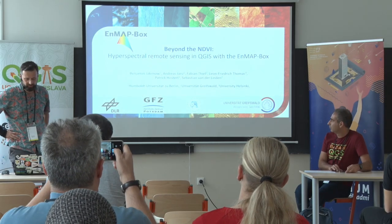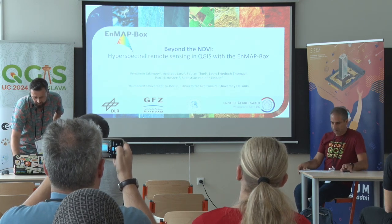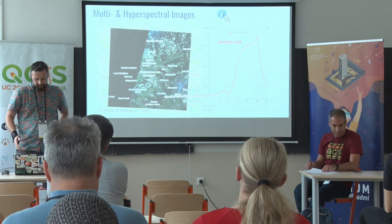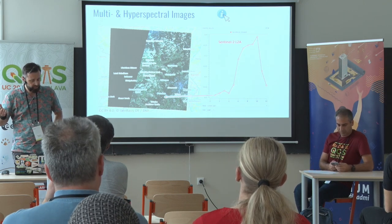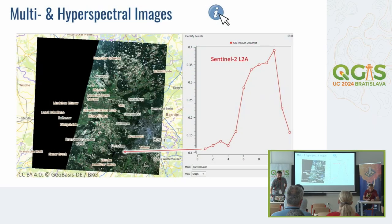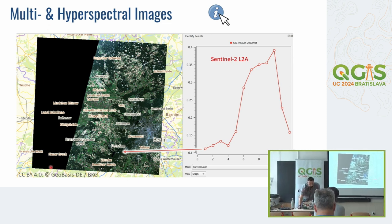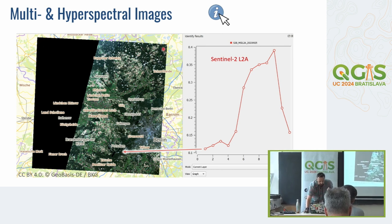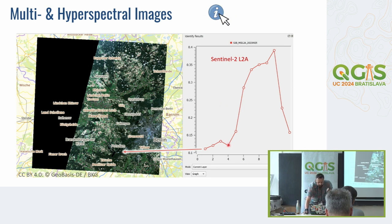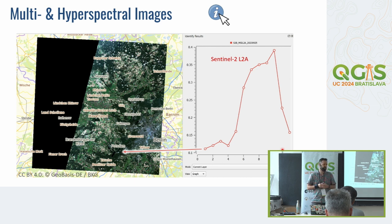My presentation is about hyperspectral remote sensing. Starting with a typical multispectral raster image from one of the Sentinel satellites — if you open it in QGIS, you'll see a typical Sentinel-2 scene covering 100 by 100 kilometers. Using the cursor identify tool, we see that for each pixel we get up to 12 raster band values. Multispectral images usually have no more than 20 band values.